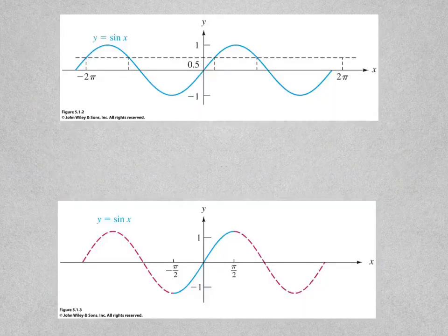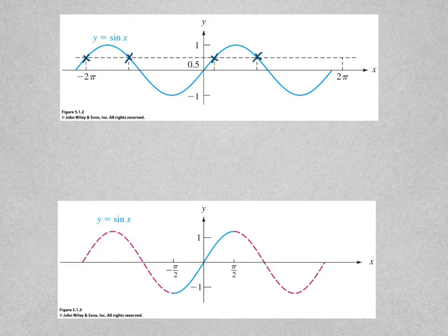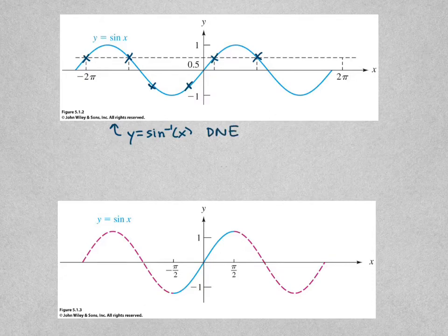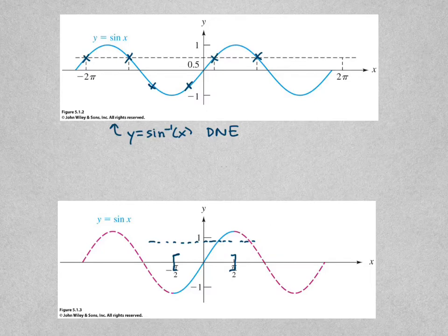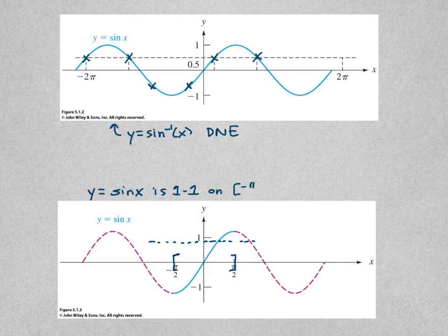If we look at y = sin(x), we see it fails the horizontal line test multiple times. So in general, y = sin⁻¹(x) does not exist. But if we restrict the domain — namely from negative π/2 to π/2 — then this passes the horizontal line test. So we can say y = sin(x) is one-to-one on the interval negative π/2 to π/2, and sine inverse of x exists.